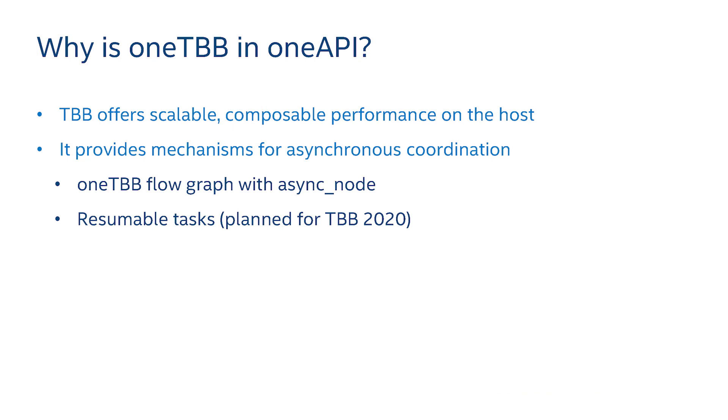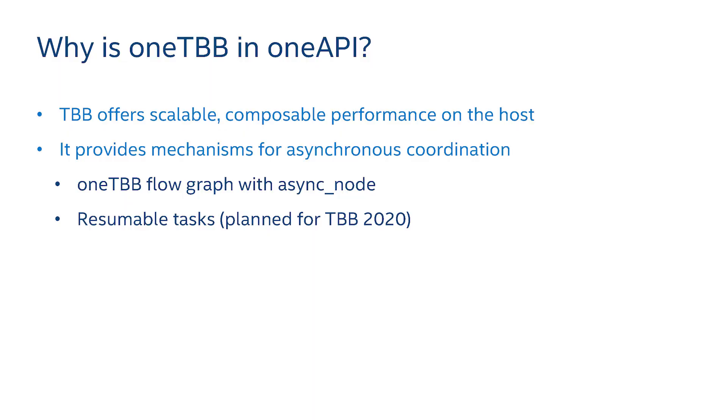If you're writing part of your application using TBB directly, you can make use of some of these features. In our flow graph, we have an async node which allows you to do asynchronous communication with an accelerator. You could embed DPC++ code there and allow the TBB worker not to be blocked waiting for something to return from the accelerator. You can also mix TBB and DPC++ in your application, and because what's executing on the host in DPC++ is TBB, you still get a composable application.